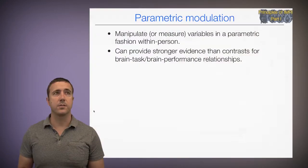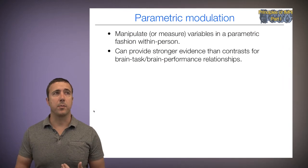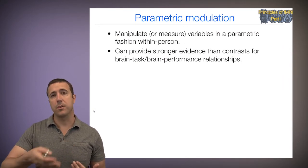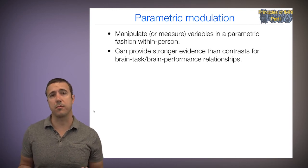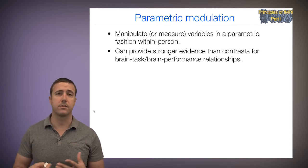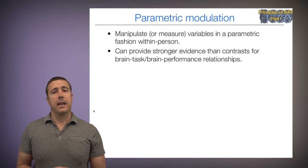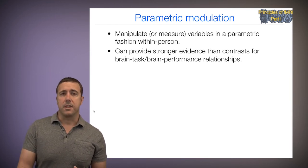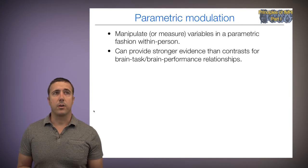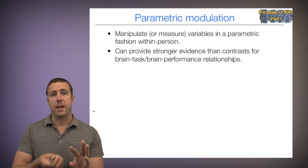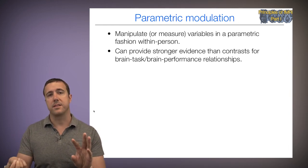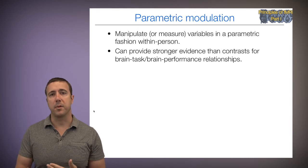Our final example is a parametric modulation design. This is one in which I manipulate variables in a parametric fashion within person, usually with three or more levels. We can also use measured variables like performance or emotion ratings. The nice thing about this is that it can help with the specificity of our inferences, providing stronger evidence than basic contrasts that there's a relationship between brain activity and the process you're studying.